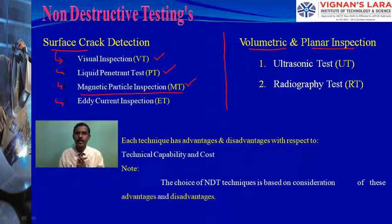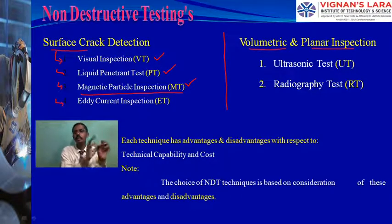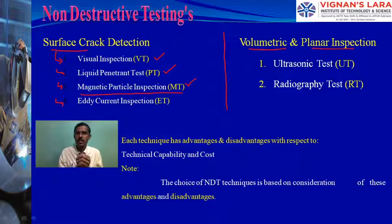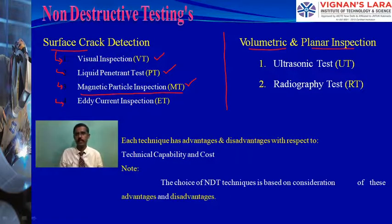One thing we should remember: the choice of NDT technique depends on whether the defect is on the surface or subsurface. For surface defects we choose one of four methods; for subsurface, one of two. The selection is based on considerations like thickness, cost, and access to the specimen. Liquid penetrant inspection and magnetic particle inspection both work on surfaces, but with a small difference.